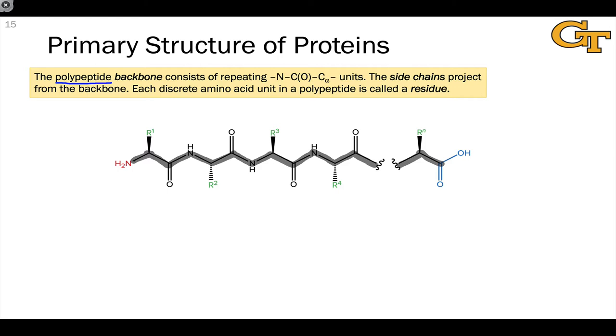In the backbone, we can identify a free amino or ammonium group on one side, that's called the N or nitrogen terminus, and a free carboxylic acid or carboxylate group on the other side, and that's called the C or carbonyl or carbon terminus. The side chains that project from the backbone just depend on the sequence of amino acids in the polypeptide.